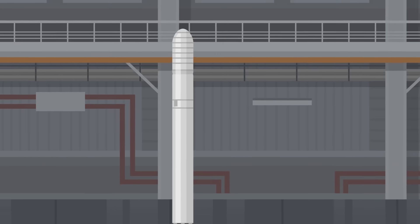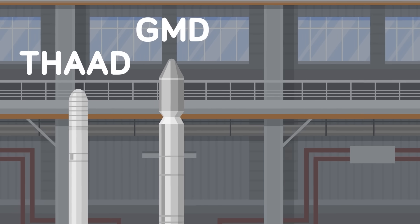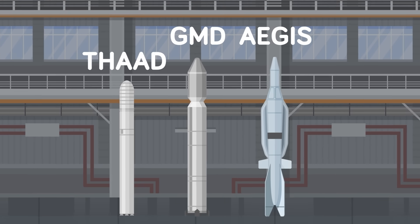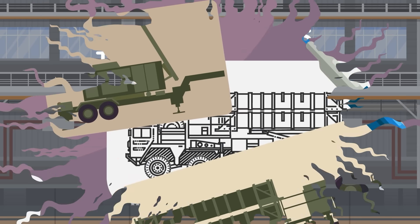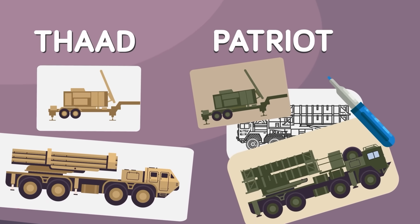Similar to AEGIS and GMD, THAAD also employs a kinetic warhead to destroy incoming targets. But unlike AEGIS and GMD, THAAD has a much more limited range. Sort of like Patriot missiles, but for ICBMs, these batteries are limited in their range by their own organic sensors.